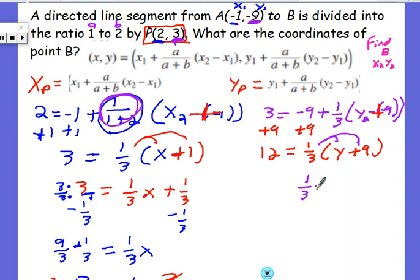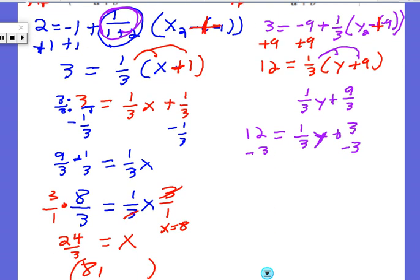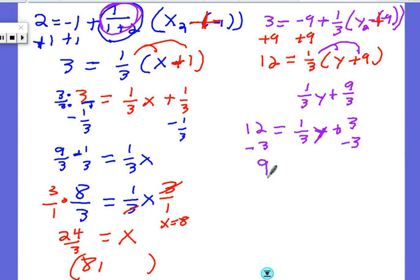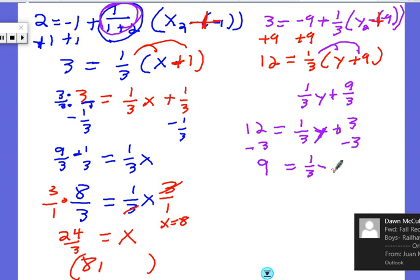It gives me one-third y plus 9 over 3. Nine over 3 simplifies to just 3, and nice to get away from fractions for a moment, equals 12. As I'm solving for y here, I need to subtract 3 from both sides. 12 minus 3 is 9 equals one-third y.